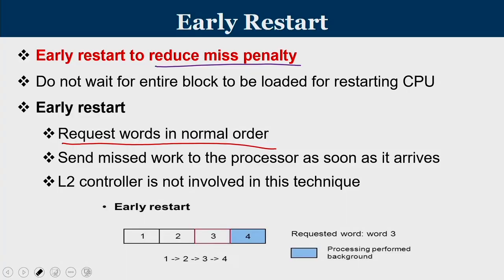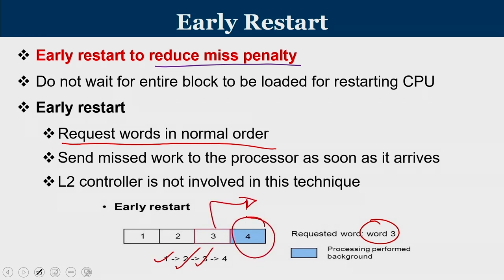For example, if the requested word is word 3, words 1 and 2 are fetched first, then word 3 arrives and is supplied to the processor. In the background, word 4 is being placed in the cache. So the processor is already working with word 3 while word 4 is stored in the background.